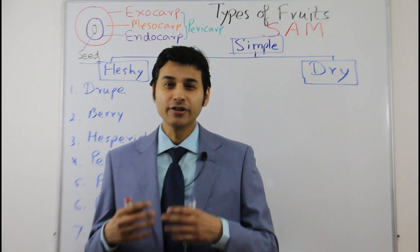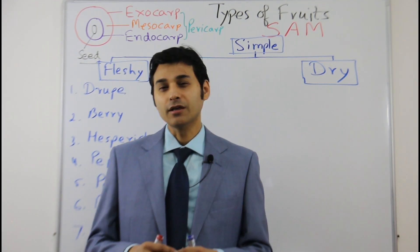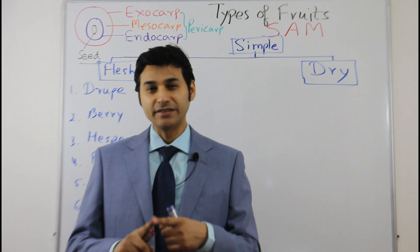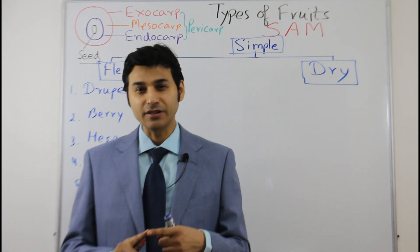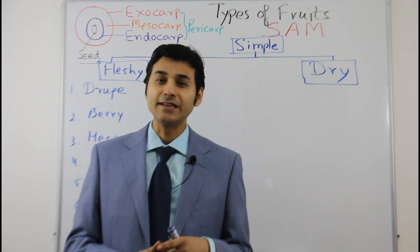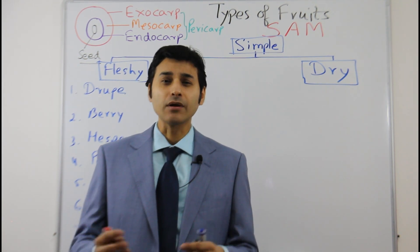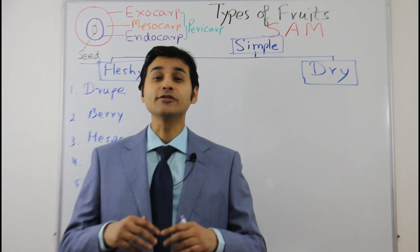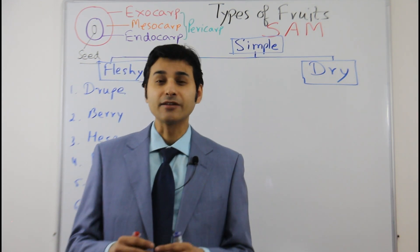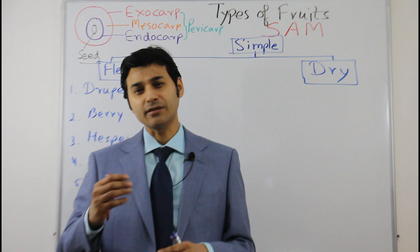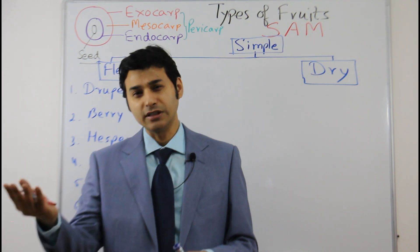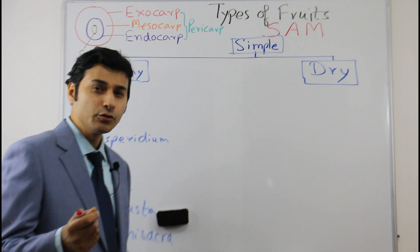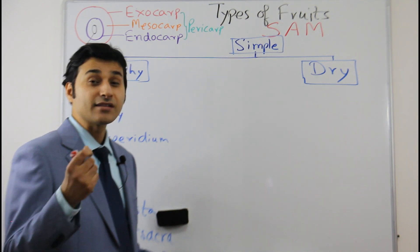In the last video we discussed about fruits. Botanically, a fruit is a fertilized and ripened ovary. However, in some cases fruits also develop without fertilization, which is called Parthenocarpy. We will discuss that in a later video. Last time I also told you how to remember the types of fruits.